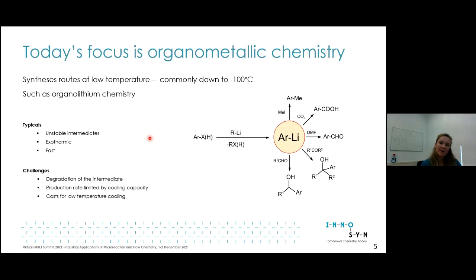Typical characteristics are that the intermediate is unstable, the reaction is exothermic and fast. The challenges are that this very reactive intermediate can degrade over time affecting yield. Due to high exothermicity you have to slow down the reaction rate, therefore decreasing production rate. Due to low temperatures you need substantial energy to cool the reaction, bringing costs up.